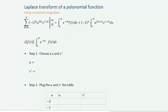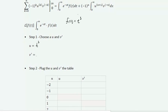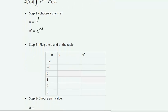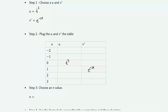Let's say our f(t) equals t cubed. t cubed is an algebraic term, and we know that taking enough derivatives of t cubed we will eventually get a constant. So we choose our u term to be t cubed, leaving e^(-st) as our v prime. Now we need to plug u and v into our table.